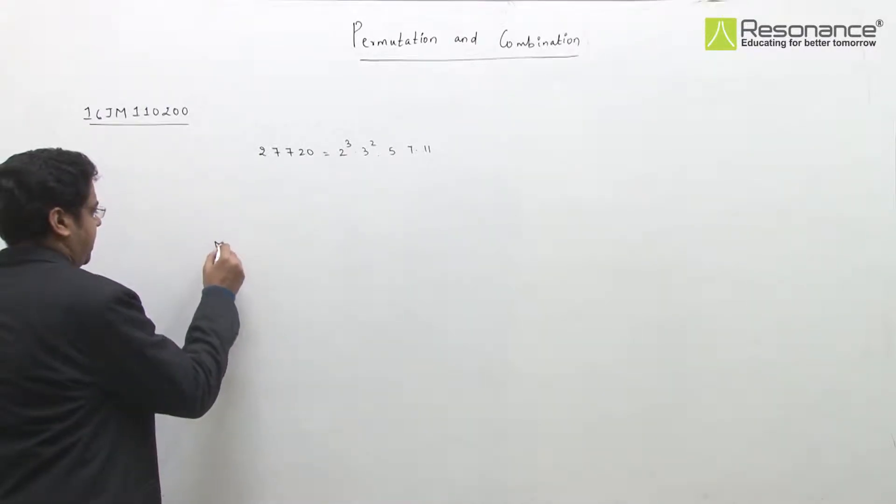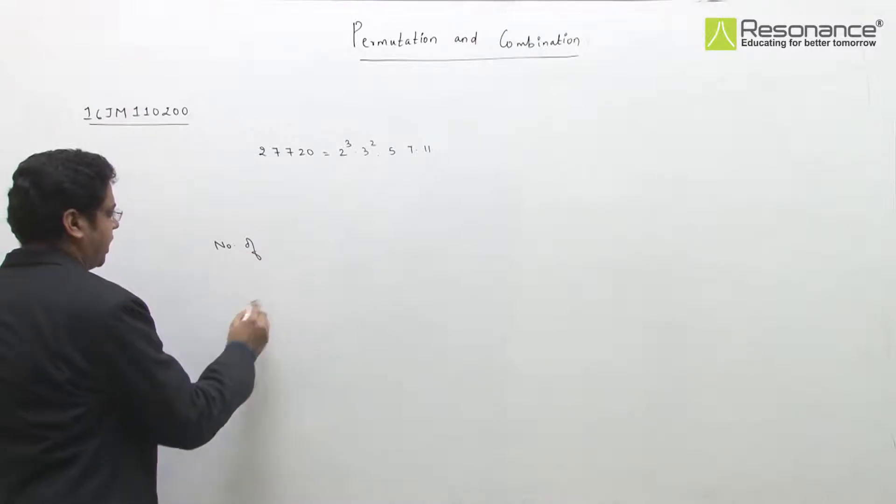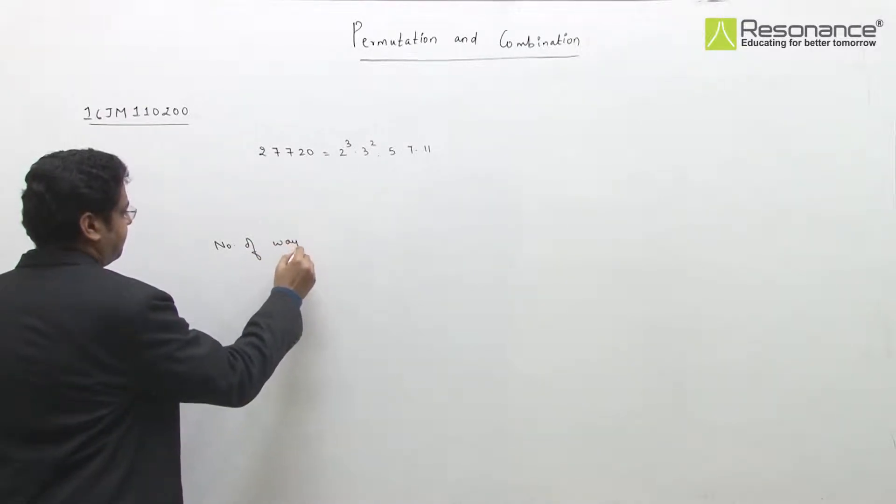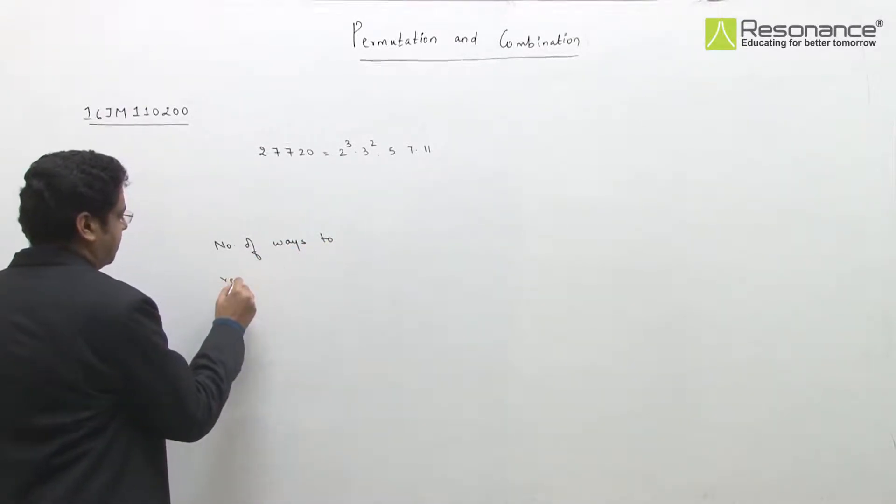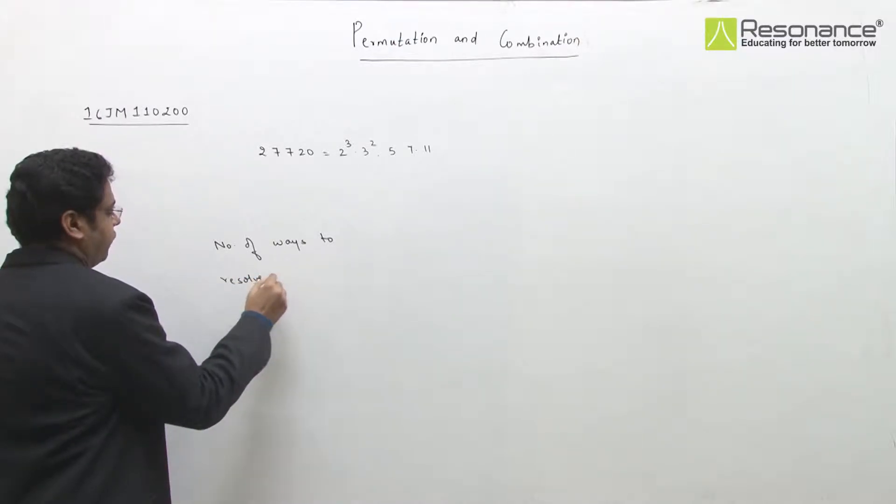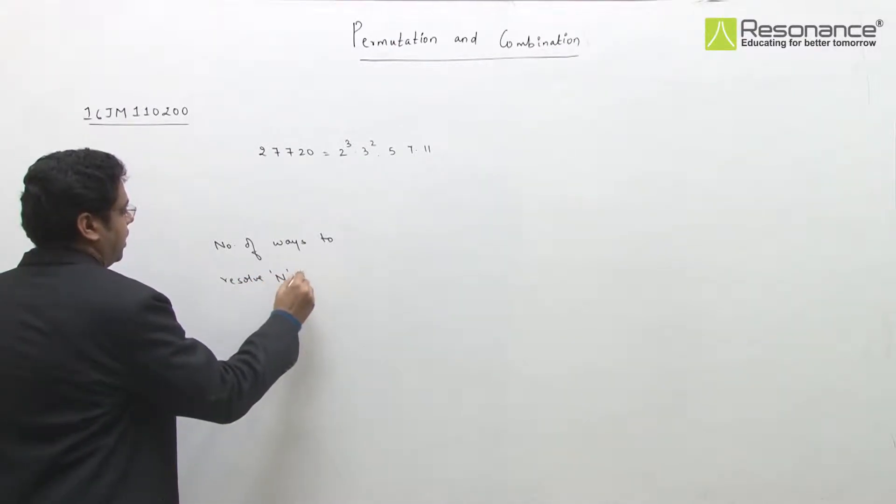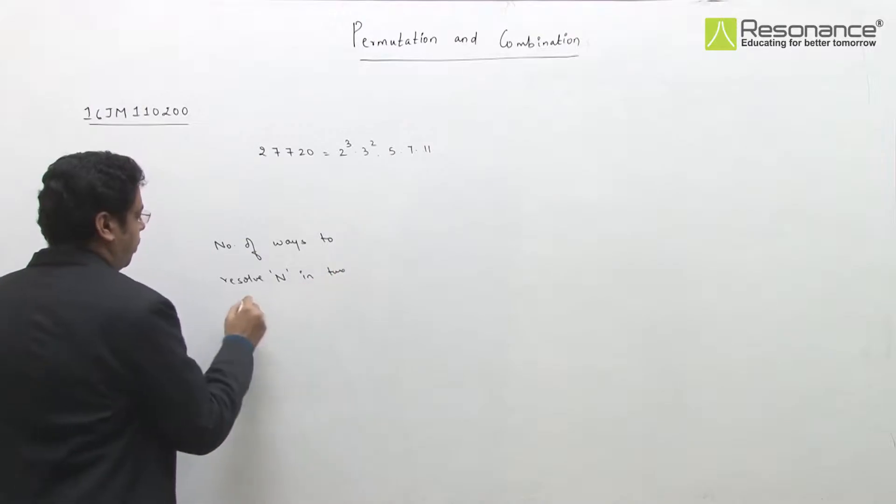So this is a simple problem in which we have to use a result. The number of ways to resolve a number n to co-prime factors.